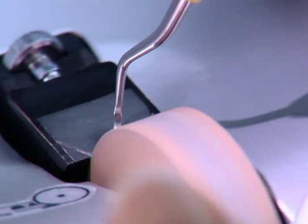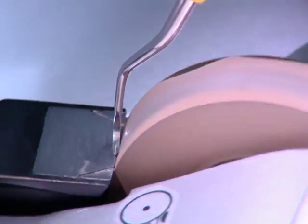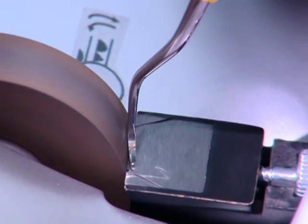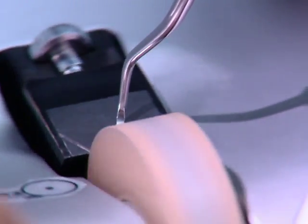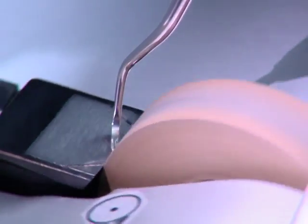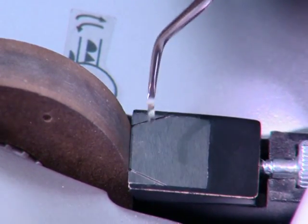Begin sharpening from the blade heel and continue around the tip to the other side of the blade in one motion. Repeat this sharpening motion until the instrument is sharp. Follow this sharpening procedure for all Universal Curettes.